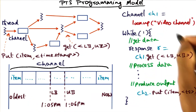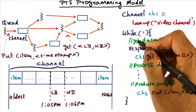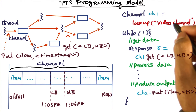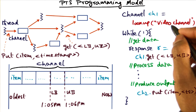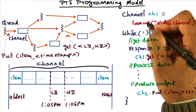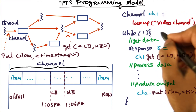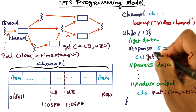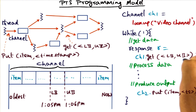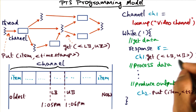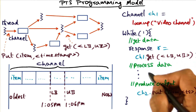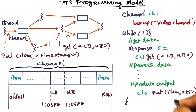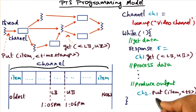This is the way one could write a program using the primitives provided by the PTS programming model. Let's say we are writing the code for a detector looking at a video stream produced by a particular camera. The detector will associate a variable channel 1 with the video stream that the camera is producing. Continuously, it is going to get a camera image from that channel, specifying a lower bound and an upper bound in terms of time. It will process the data, produce an output, and place that output as a digest of information it processed into another channel, associating a timestamp with the new item.